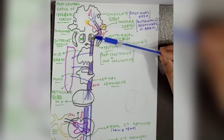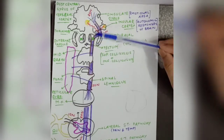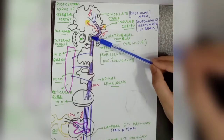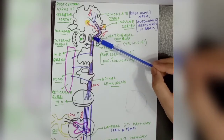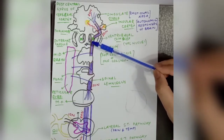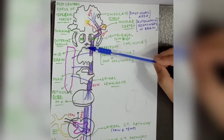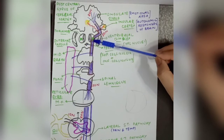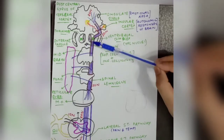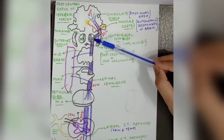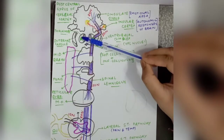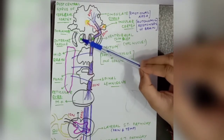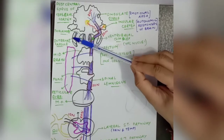The anterior and lateral spinothalamic pathway fibers proceed to the thalamus, specifically to the ventrobasal complex, which contains the ventroposterolateral nuclei. The second order neurons of the anterior and lateral spinothalamic pathway terminate in the ventroposterolateral nuclei of the thalamus. From here, the third order neuron begins, passing through the posterior limb of the internal capsule.